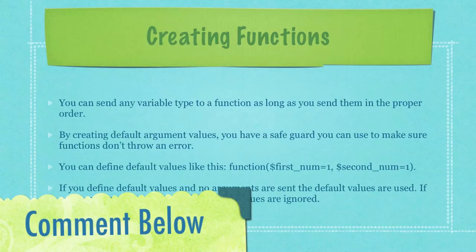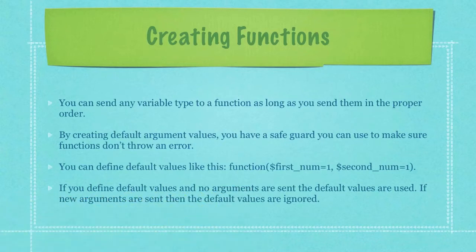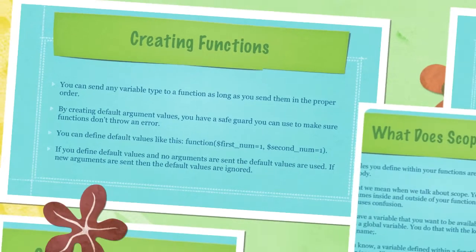You can send any variable type to a function as long as you send them in the proper order. By creating default argument values, you have a safeguard to make sure functions don't throw an error. You can define default values like this — I'm defining a default value for both firstNum and secondNum. If you define default values and no arguments are sent, the default values are used. If new arguments are sent, however, then the default values are ignored.